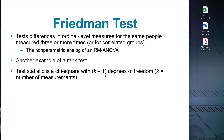The Friedman test extends the comparison of dependent groups to scenarios where there are more than two related groups. It serves as a non-parametric alternative to the repeated measures ANOVA. The Friedman test ranks the observations within each group and calculates the average rank for each group, then compares the average ranks across groups to determine if there are significant differences. The test produces a chi-square test statistic and a corresponding p-value.